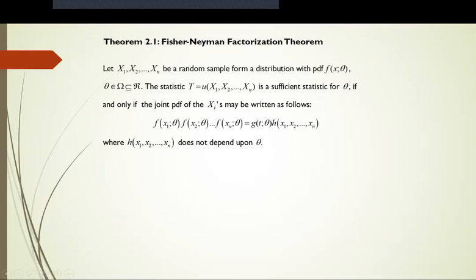We have the joint PDF f(x1|theta), f(x2|theta), ..., f(xn|theta) split into two parts. The first part is a function g, and the other part is a function h. As you can see, h does not depend upon theta.